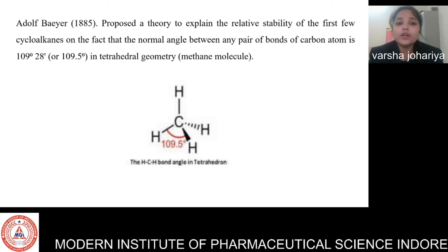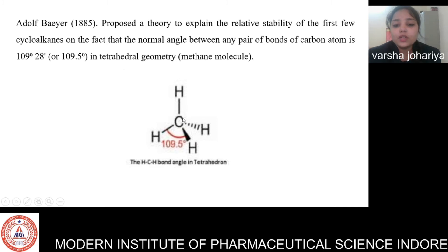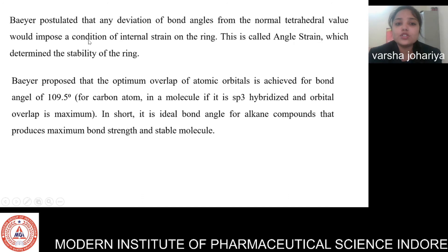Adolf Bayer in 1885 proposed the theory to explain the relative stability of small cycloalkanes, based on the fact that the normal angle between any pair of bonds at a carbon atom is 109.5 degrees — the tetrahedral geometry. For example, in methane (CH4), carbon is bonded to four hydrogens, and the H-C-H bond angle is 109.5 degrees due to tetrahedral geometry. Bayer postulated that any deviation from this bond angle would impose a condition of internal strain on the ring.